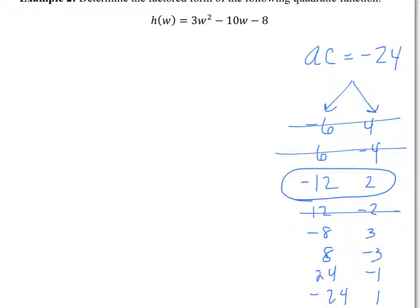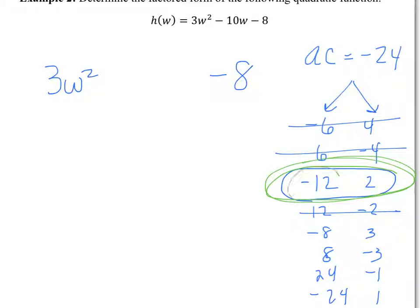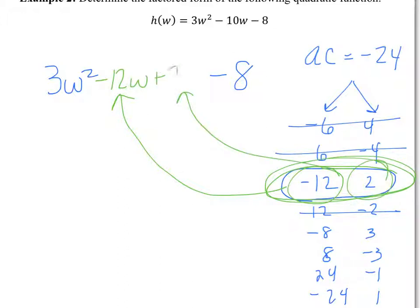This is where it differs from the other method — those are not your answers. You break up the middle term into that. Rewrite the polynomial without the middle term, then write the middle term with these two values, putting the variable in. I start with the negative 12 and put it right here, and take the 2 and put it right here. Have I changed the quadratic? No — because negative 12W plus 2W adds up to give you negative 10W, which is what you had in the beginning.